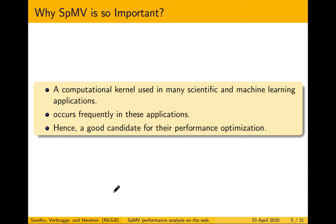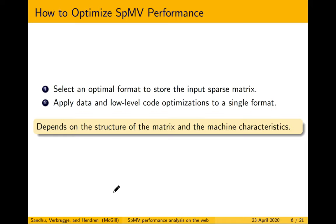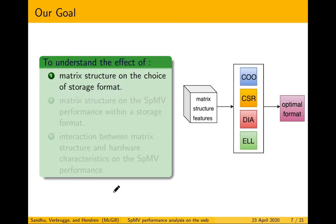Therefore SpMV has become a good candidate for performance optimization. How do we optimize SpMV performance? One way is to select an optimal format to store the input sparse matrix. The second way is to apply data and low-level code optimizations to a single format. However, both techniques depend on the structure of the matrix and the machine characteristics.